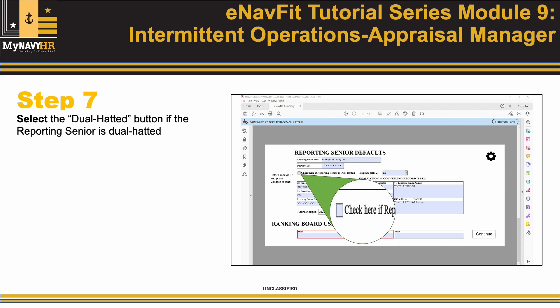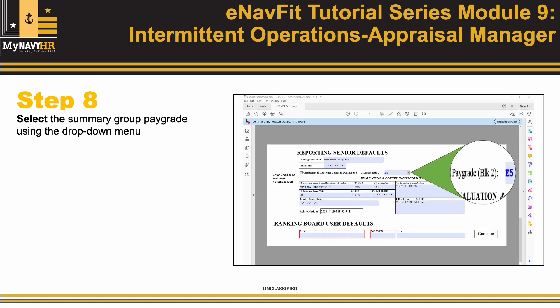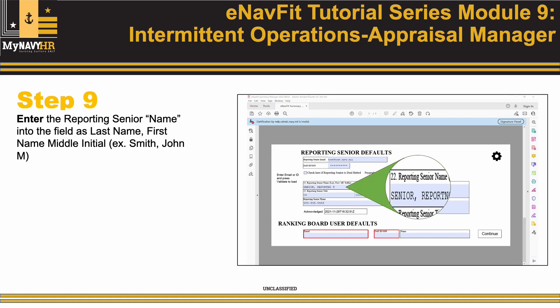Step 7: Select the Dual Hatted button if the Reporting Senior is dual-hatted. Step 8: Select the Summary Group pay grade using the drop-down menu. Step 9: Enter the Reporting Senior name into the field as Last Name, First Name, Middle Initial. Example: Smith, John, M.